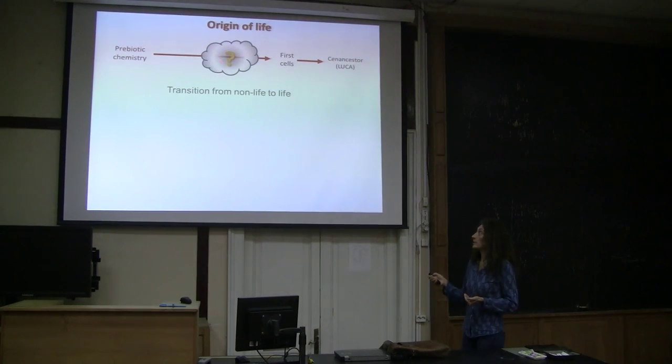So this would be the view that we have today. There is some prebiotic chemistry, we can study some of it. There is a step of first cells, and then there's an ancestor, or the last common ancestor, which is something that appears later. The major question here is how this transition from non-life here to life here occurs.